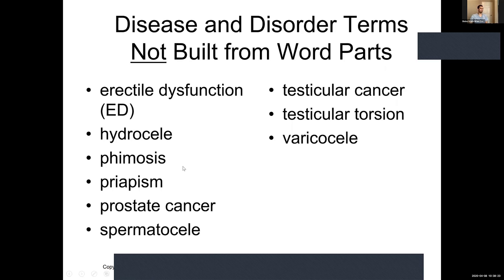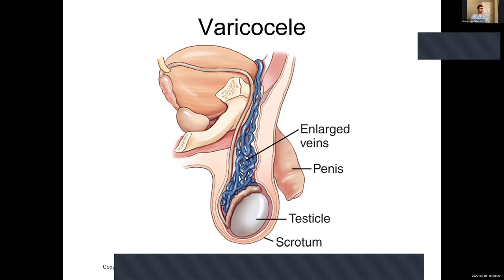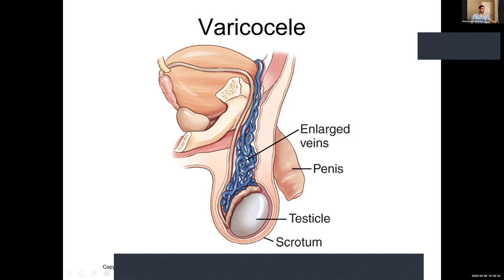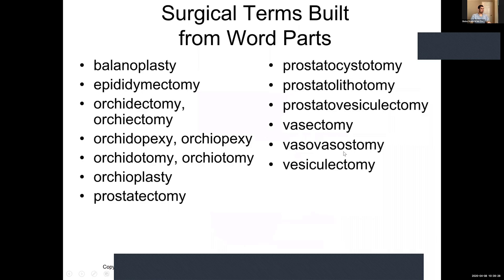A varicocele relates to the spermatic cord — the veins of the spermatic cord become enlarged. The -cele suffix indicates a protrusion or swelling, similar to how we used it with diaphragmatic hernia in the respiratory section. So a varicocele is essentially enlarged or swollen veins of the spermatic cord.